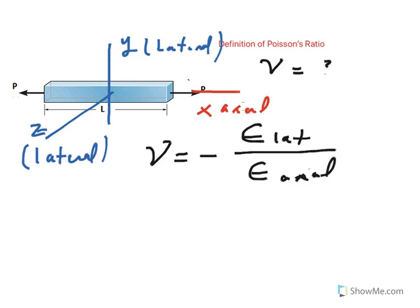Now the reason we have negative is that regardless of how you apply the load, if you put the axial direction in tension, the other two directions would compress. As a result, one of these strains is going to be always negative regardless of how you're loading. Because you don't want to have a negative ratio, you just put a negative sign.